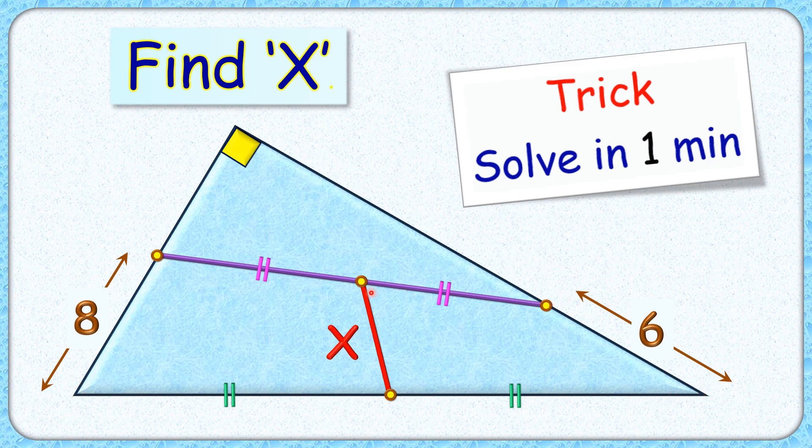The midpoints of this purple line segment and hypotenuse are joined together. The exciting part is with this limited data we have to find the length of this red line segment or value of x.